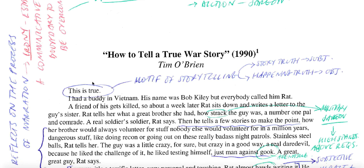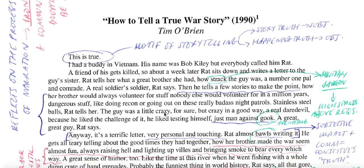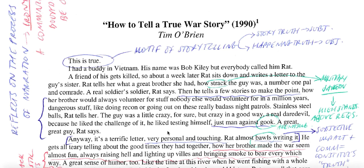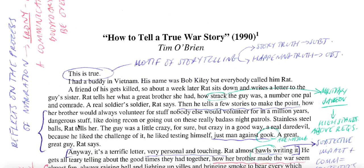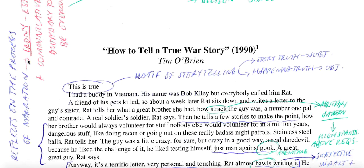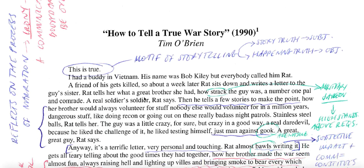He begins with his story about his buddy Rat Kiley writing a letter about a friend who died during the Vietnam War to the guy's sister, and the emotive intensity of that experience. The story itself is a constant reflection on the nature of writing and storytelling — it is metafictional in a great deal of its narration. The opening anecdote reflects on the process of narration, which is ironic because it establishes a communicative boundary to be overcome through narration itself.